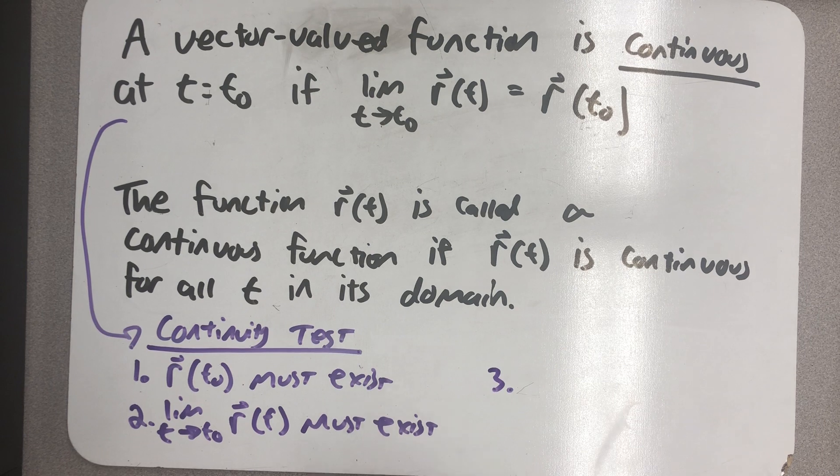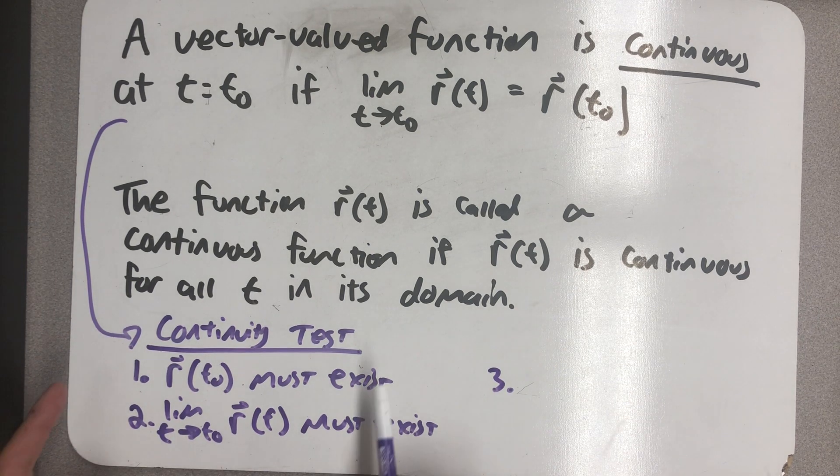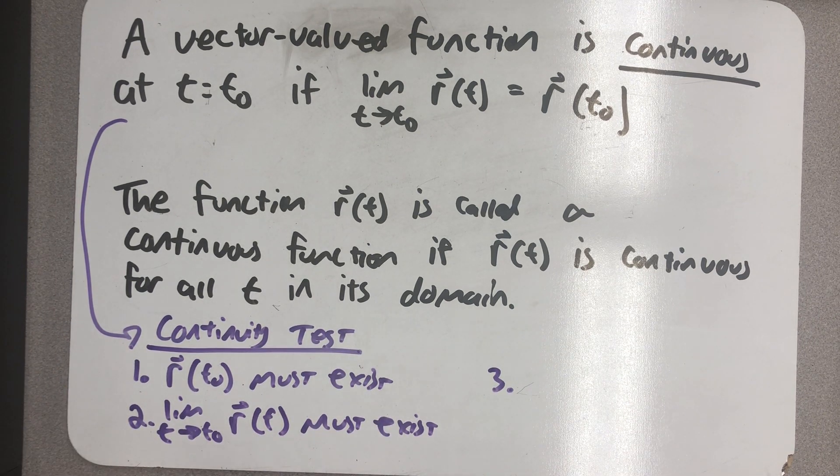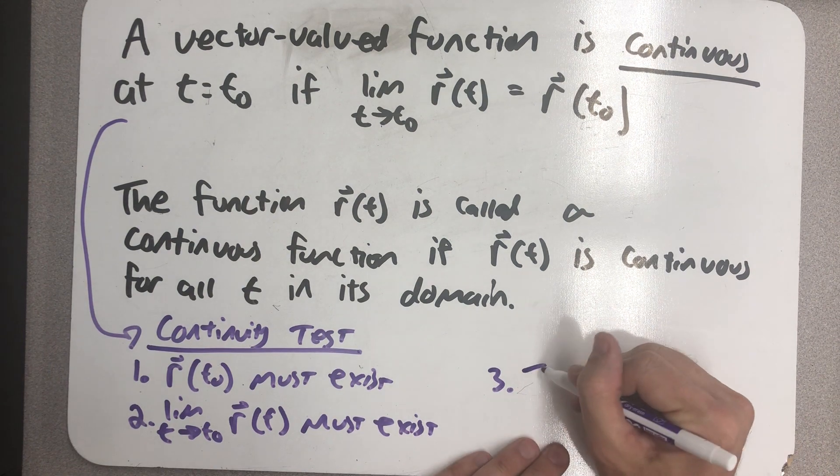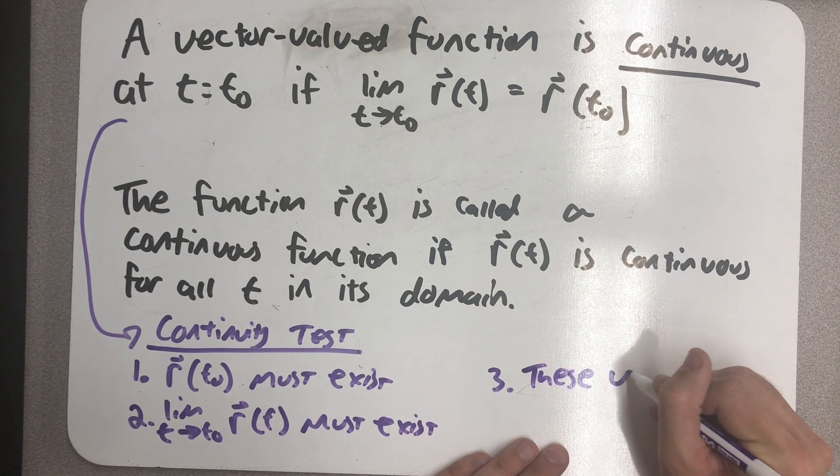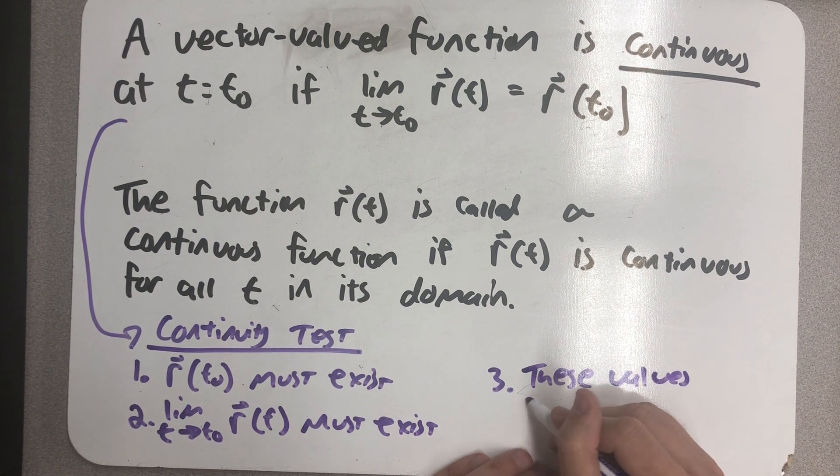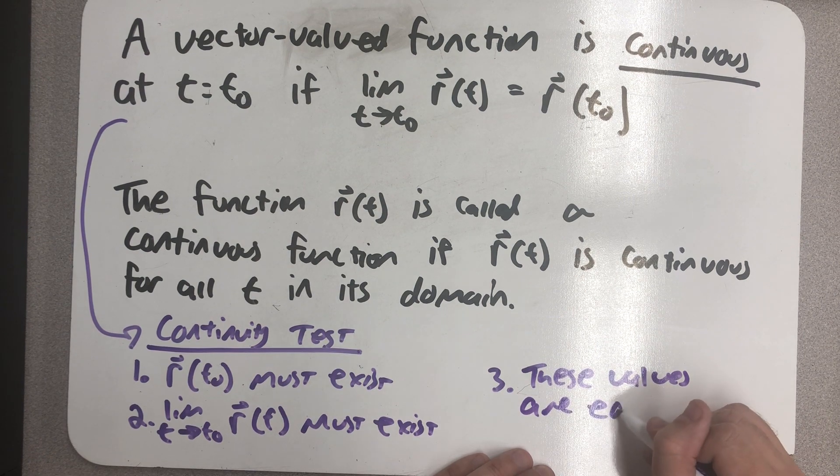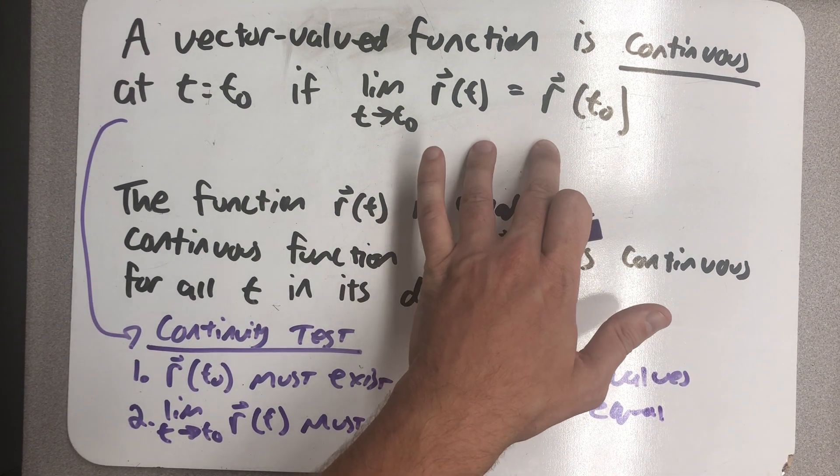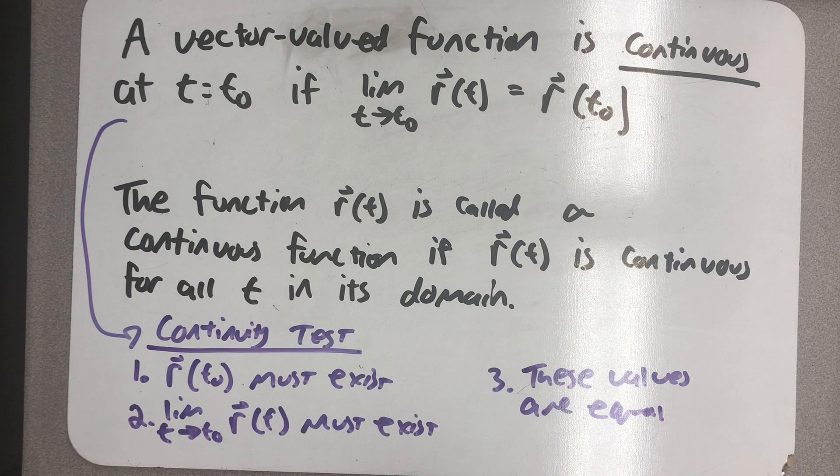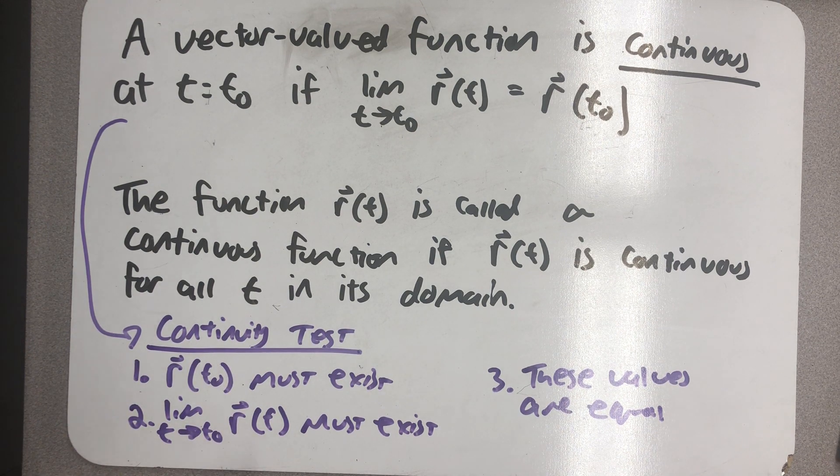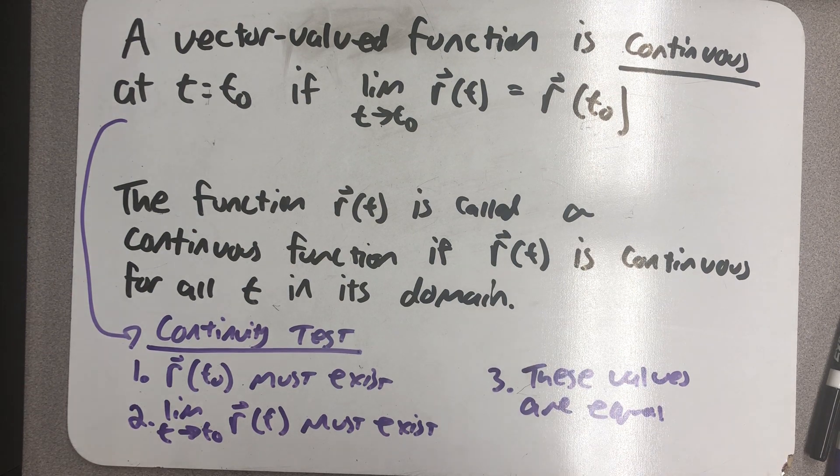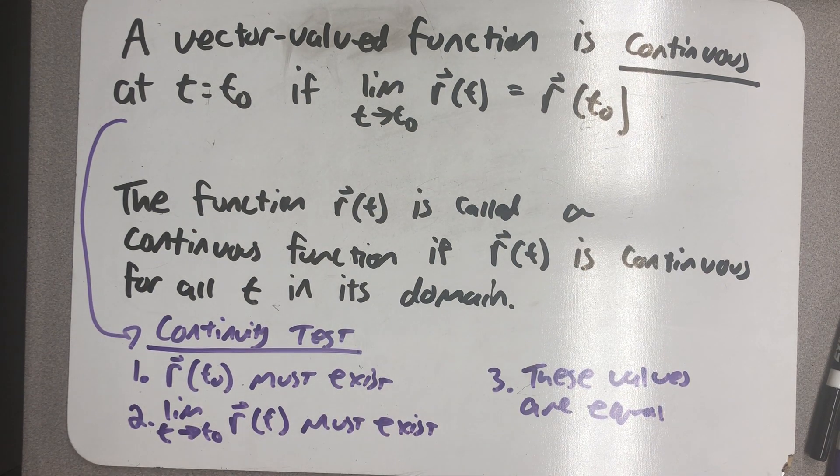And then the third step, the third thing to check, is that these values that must exist have to be the same thing. Which is exactly what I've written here, that those values match. This limit must match r of t-naught, and it means all three scalar functions limits match all three scalar functions function value.